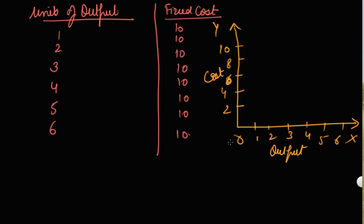For all outputs, your total cost is 10. You produce 6 carpets, you have to bear a fixed cost of 10. You produce 5 carpets, you have to bear a fixed cost of 10. So your total fixed cost is constant. This is your total fixed cost diagram. Your TFC curve is a straight line.